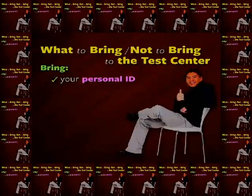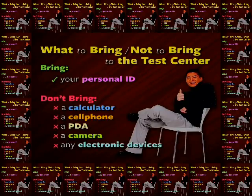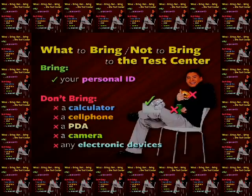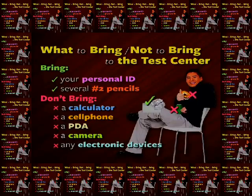When you take the computer-based GRE, you can't bring anything into the test center other than your personal ID. No calculators, phones, PDAs, cameras, or other electronic devices can be brought into the test centers. You also can't bring any food or drink. The test center proctors will provide you with scratch paper for making notes, and you're not allowed to take this scratch paper from the room. If you take the paper-based test, including any of the subject tests, you should bring several sharpened number two pencils. But if you take the computer-based test, don't bring pens or pencils — you'll be provided a tool to work on the scratch paper with.